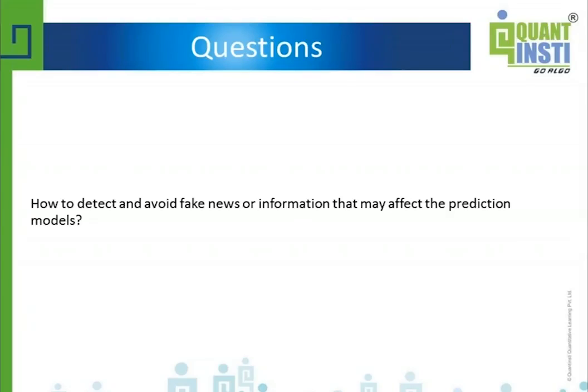What happens if there is a news portal that got hacked and some hacker puts wrong news on there, but the authority of that newspaper portal or its Twitter account is pretty high? Is there a way, because that is genuine content, is there a way this AI can curb it?